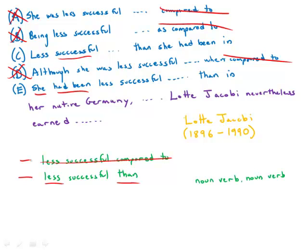The problem with E is that we also have a subject and verb after the comma — the name and 'earned.' When we have noun, verb, comma, noun, verb, that is a structure known as a run-on sentence. So E is grammatically incorrect. We need something to join the two — either a conjunction in between, or we need to make one a dependent clause and the other an independent clause.